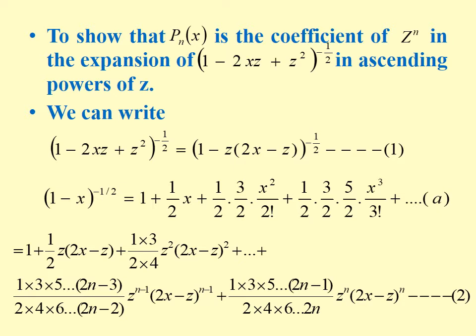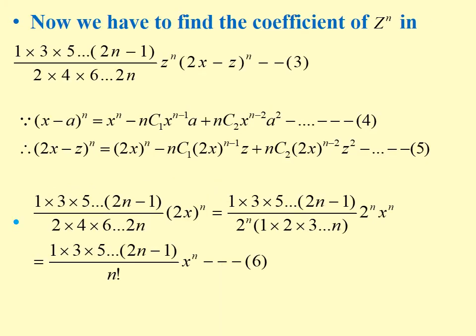In the first term, there is no coefficient of z power n. In the second also, there is no coefficient of z power n. So we will start from the last term. To find the coefficient of z power n in (1·3·5···(2n-1))/(2·4·6···2n) times z power n times (2x minus z) whole power n.